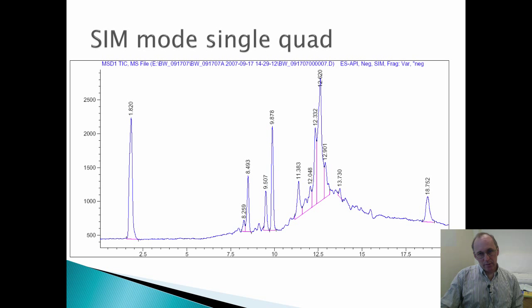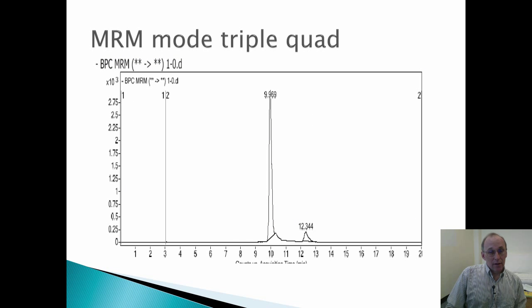Now, if we take the same sample, analyze it on a triple quad using MRM mode, this trace now looks like this. So all the compounds that have the same parent M over Z value but not the same product M over Z value are filtered out. This gives us a nice, clean peak, which we can much more confidently quantitate and get a good, accurate number on.